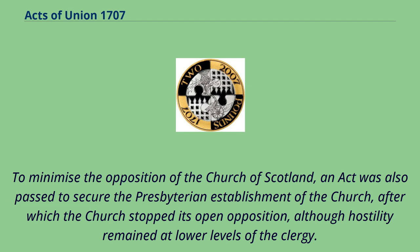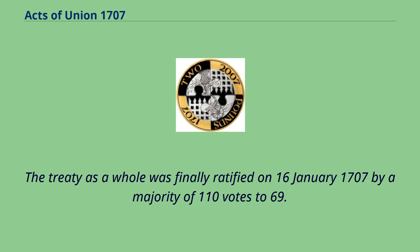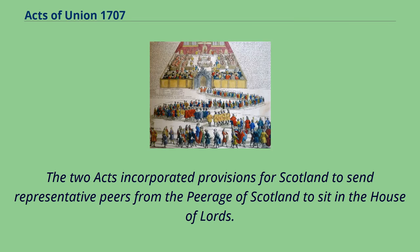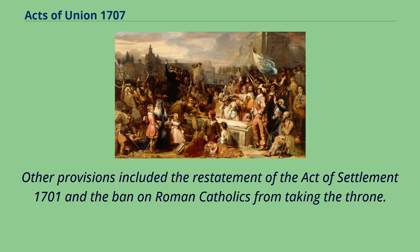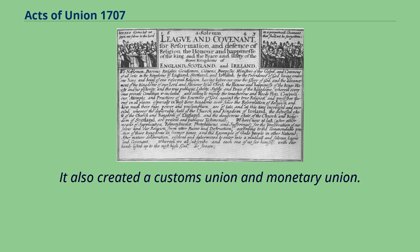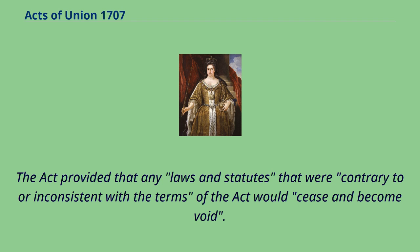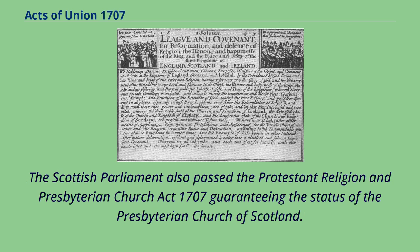The treaty as a whole was finally ratified on January 16, 1707 by a majority of 110 votes to 69. The two acts incorporated provisions for Scotland to send representative peers from the peerage of Scotland to sit in the House of Lords. They guaranteed that the Church of Scotland would remain the established Church in Scotland, that the Court of Session would remain in all time coming within Scotland, and that Scots law would remain in the same force as before. Other provisions included the restatement of the Act of Settlement 1701 and the ban on Roman Catholics from taking the throne. The Act also created a customs union and monetary union, and provided that any laws contrary to or inconsistent with the terms of the Act would cease and become void.